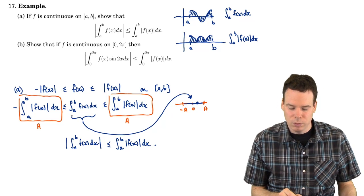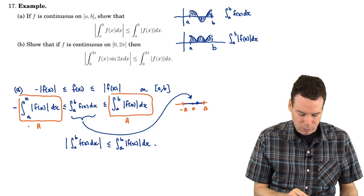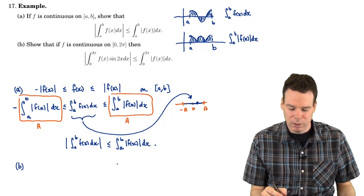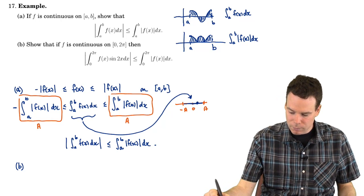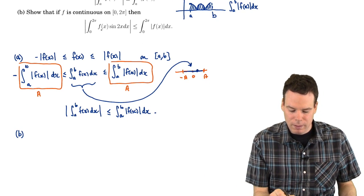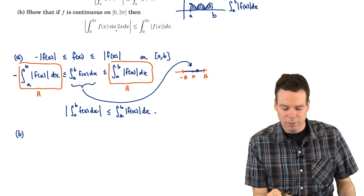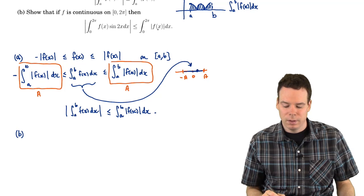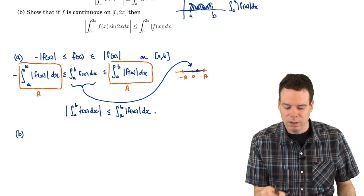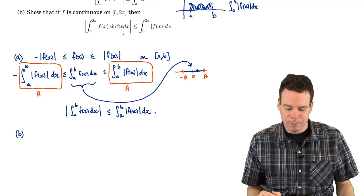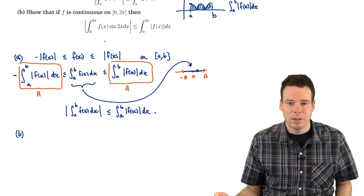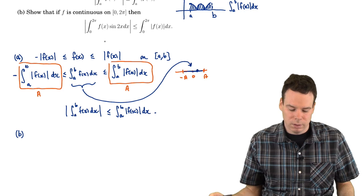So that's how we can use the comparison properties of integrals — how integrals respect those inequalities — to prove theoretical results about how absolute values interact with integration. Here's the next example: show that if f is continuous on [0, 2π], then the absolute value of the integral of f(x) sin(2x) dx is smaller than the integral of the absolute value of f(x). In some sense we're able to get rid of the sine function at the cost of having an inequality. This is an important result used in the analysis of Fourier series.